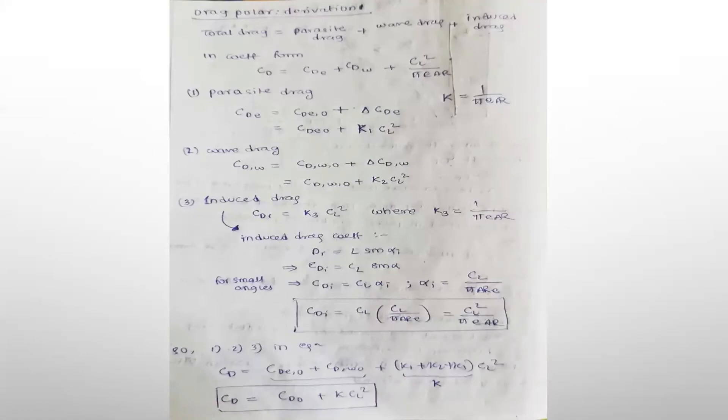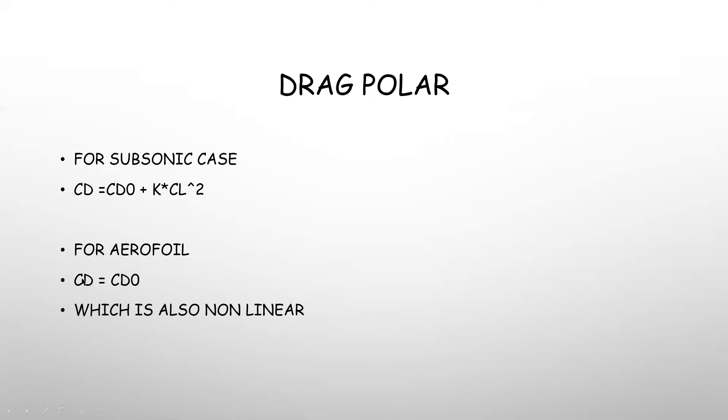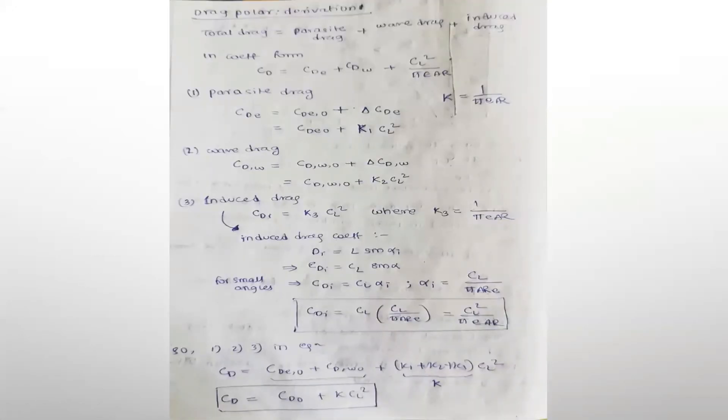Coming to the derivation: total drag is parasite drag, wave drag, and induced drag - the summation of those all. Parasite drag separately: CD is CD_0 at zero lift angle plus a term associated like K*CL^2 which makes a nonlinear term. That is why we see in the graph CL versus CD a nonlinear curve. If we were to include wave drag also, then it would have K*CL^2 term in it. Induced drag is CD = K_3*CL^2. Adding up to total drag: CD = summation of the drags, taking CL common, and this becomes K. So we get CD = CD_0 + K*CL^2.